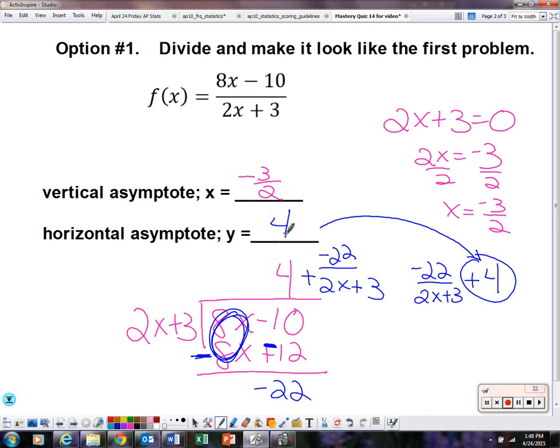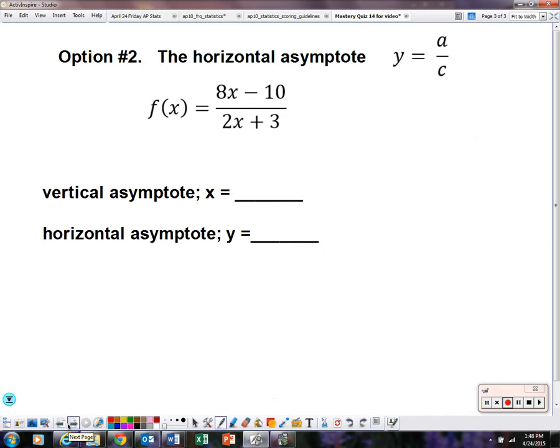Option number 2, I find simpler. The vertical asymptote, obviously, it's the same as this. So I'm just going to write that in, negative 3 over 2. The other option, option number 2, is simply to take and divide a by c.